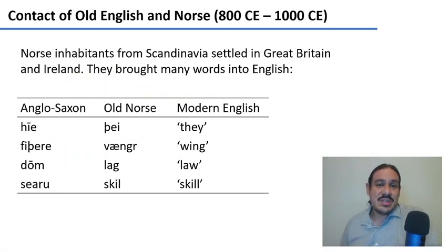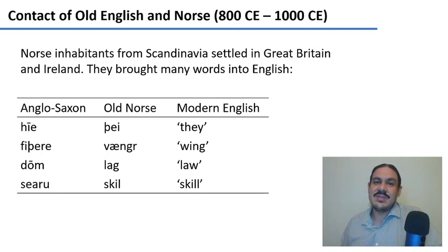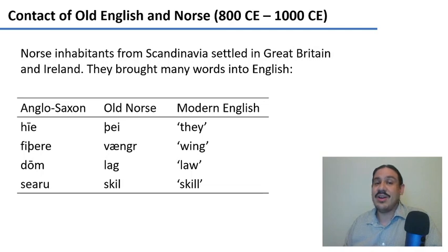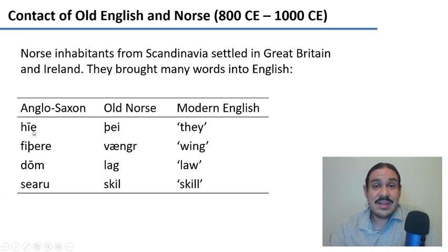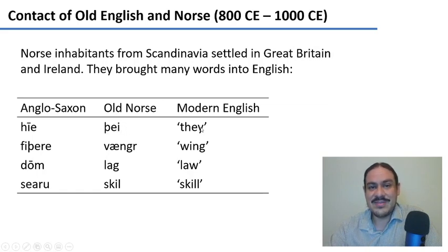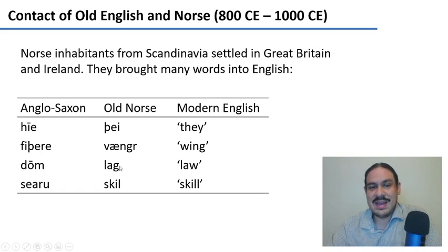Old English had very intense contact with Scandinavian languages, particularly Old Norse, as Norse inhabitants came to Britain between 800 and 1000 CE and left many words. The contact was so strong that we even inherited pronouns: the Old English pronoun 'hie' was replaced by the Old Norse form 'þeir,' which eventually became 'they.' Words like 'dom' (the old word for law) were replaced by the Old Norse form 'law,' and a perfectly good Anglo-Saxon word was replaced with 'skill.'